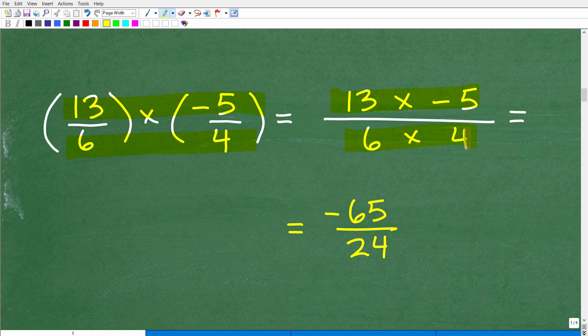So let's go ahead and just do this basic math. So 13 times five is 65. But of course, this is a positive times a negative. So our final answer will be negative. That would be negative 65 over 24.